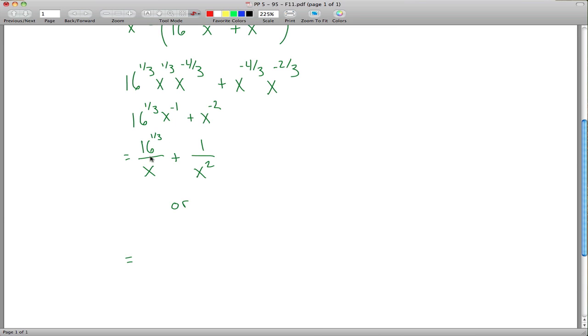The one thing we haven't done is in our class, we typically don't leave things as 16 to the 1 third. We say that's just the cube root of 16. And I can break that up into what we've been calling good and bad things. Over in the good column, we want things that are perfect cubes and the bad things that aren't perfect cubes.